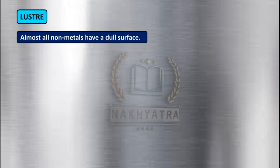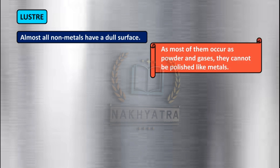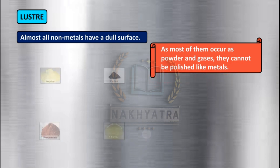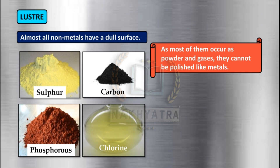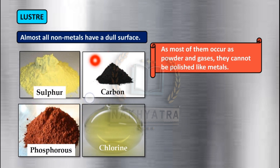Almost all non-metals have a dull surface. Non-metals do not have a shiny surface because they cannot be polished — most of them occur as powder and gases. For example, sulfur, carbon, and phosphorus exist in a powdery form, so we cannot polish them, and thus they have a dull surface. Even chlorine exists as a gas, so it cannot be polished.